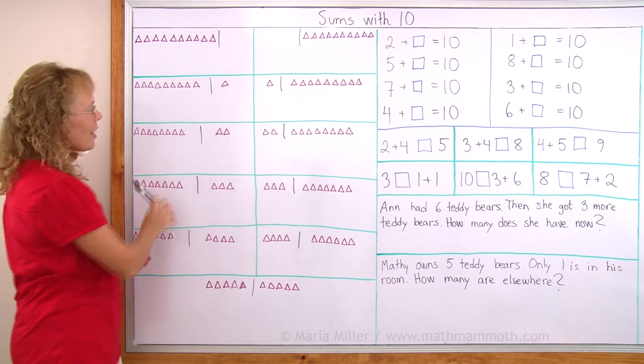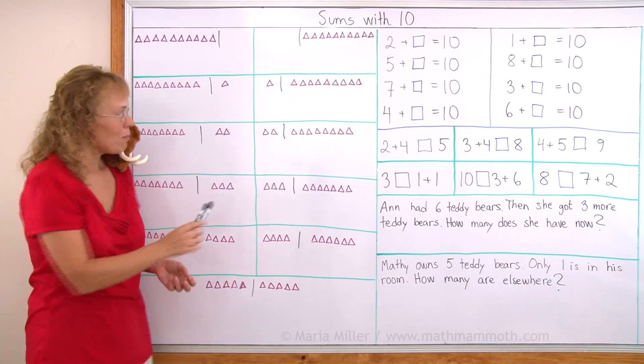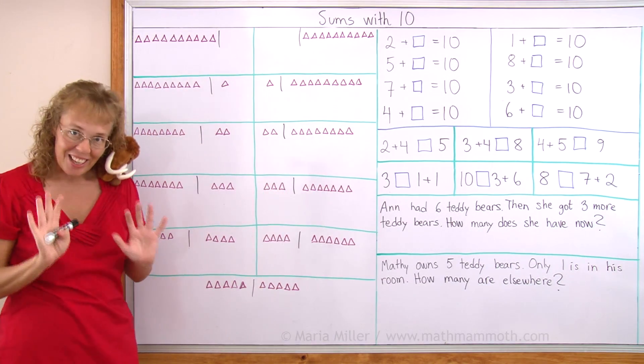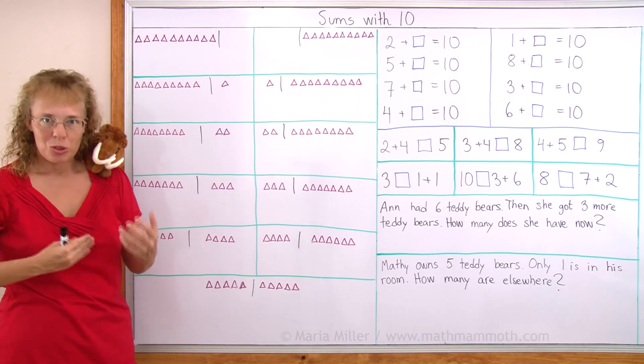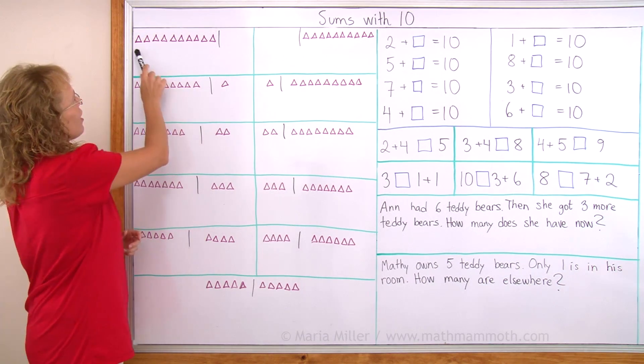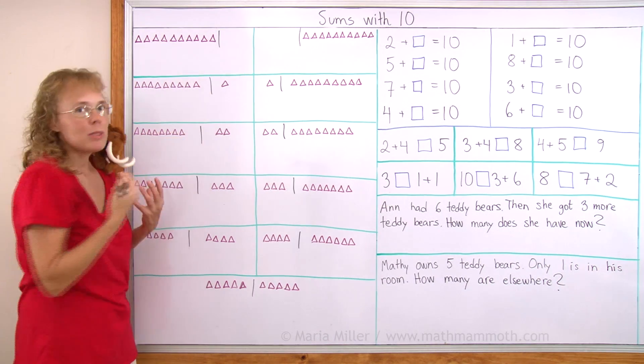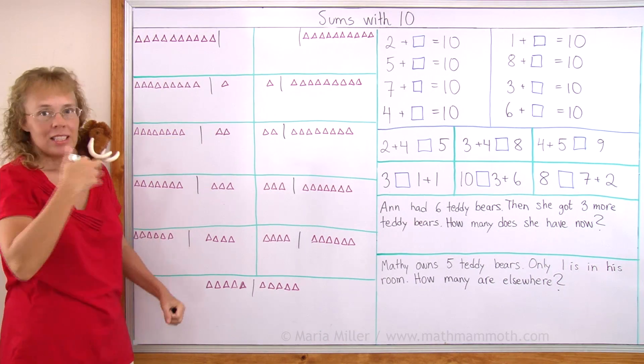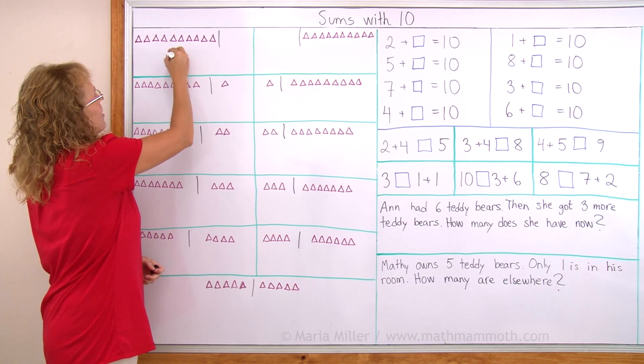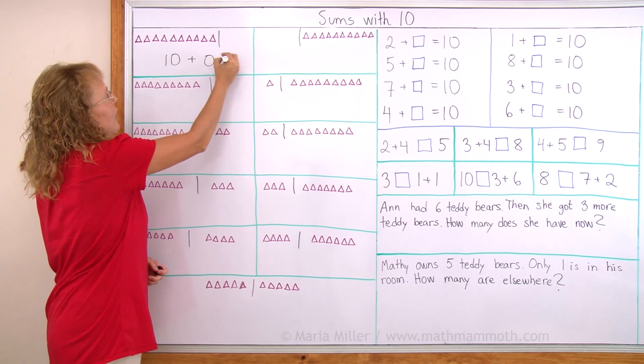And look at all these triangles I drew. In each box here there are 10 triangles, but they are divided into two groups. For example, here I have 10 triangles in this one group. In this group none or 0. And we write the addition 10 plus 0 and that equals 10.